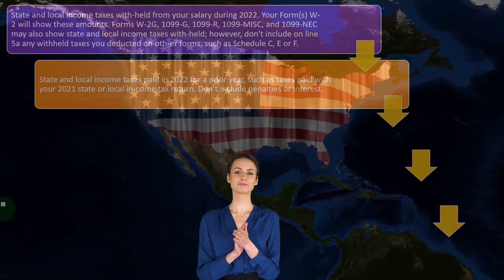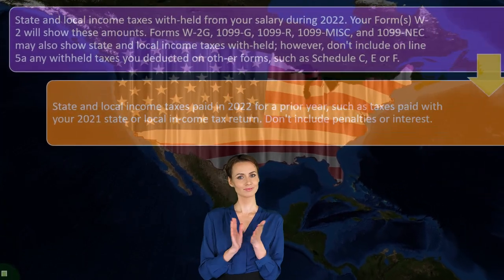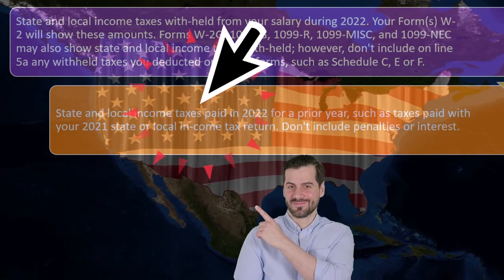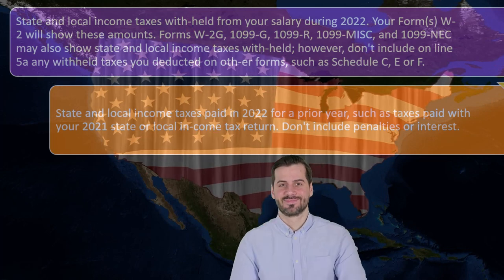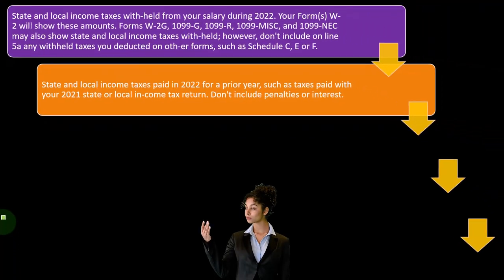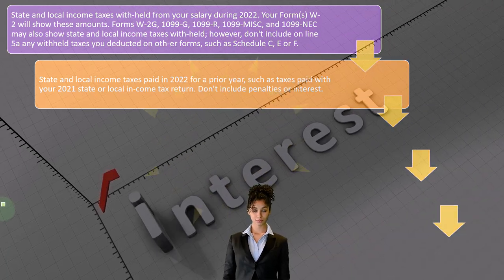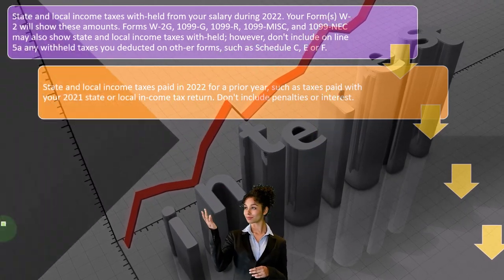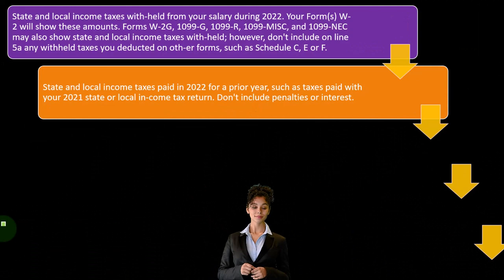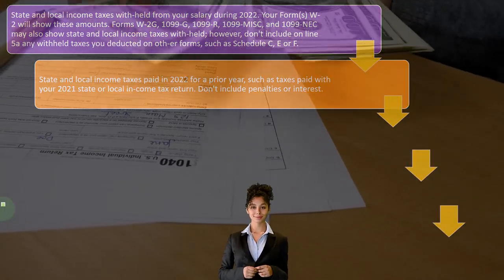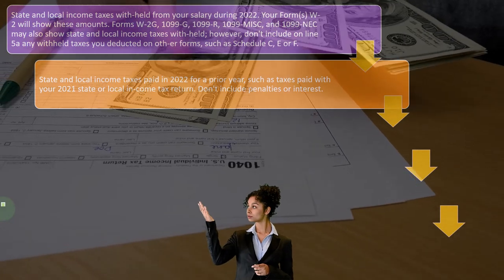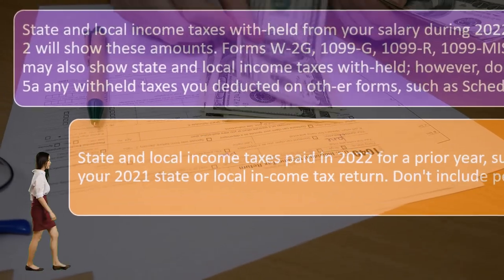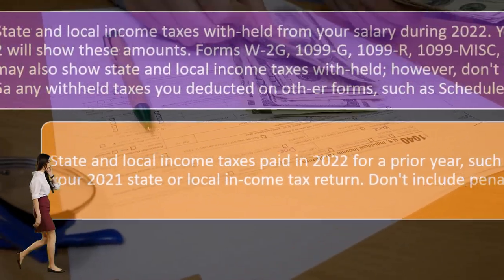It's fairly straightforward — if you're in California, you'll have the W-2 showing the withholdings. State and local income taxes paid in 2022 for a prior year — such as taxes paid with your 2021 state or local income tax return — don't include penalties or interest. Also note that you paid taxes out of your paycheck to the government, and that's the amount that might be deductible as a Schedule A itemized deduction if you have the capacity to itemize.